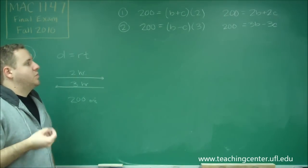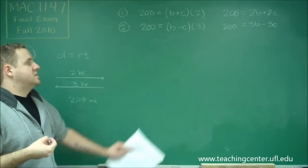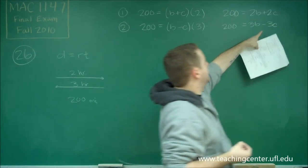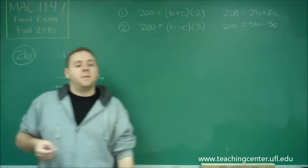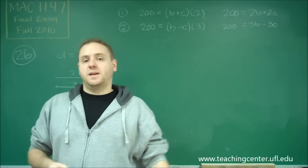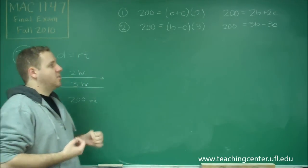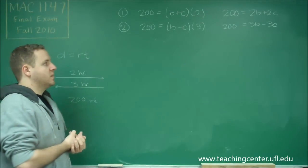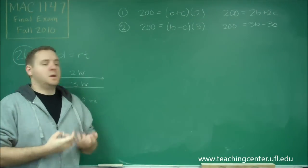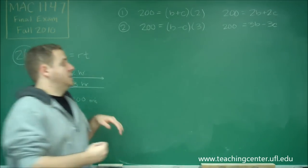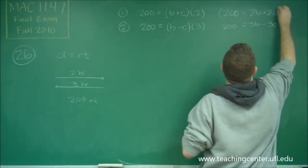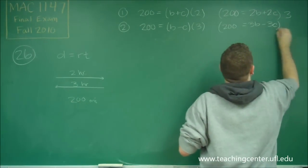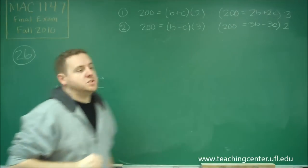So the best way to do this one would probably be elimination. Since C already has a negative sign here and a positive sign there, that one makes the most sense to cancel out. So we just need to get the coefficients to be the same. So since we have 2 and 3, we need to make them both 6, meaning we need to multiply the top equation by 3, the bottom equation by 2.